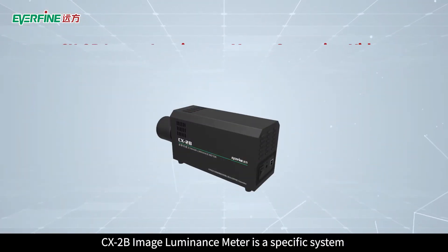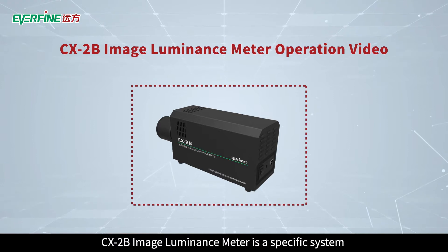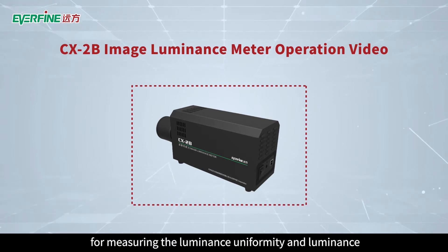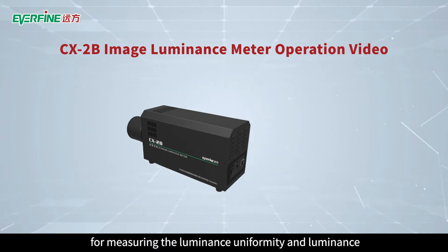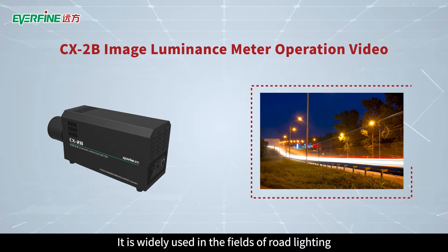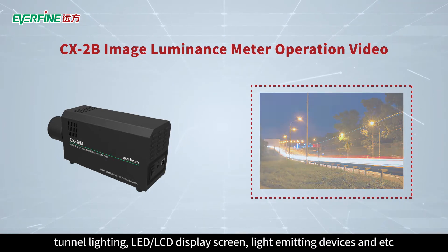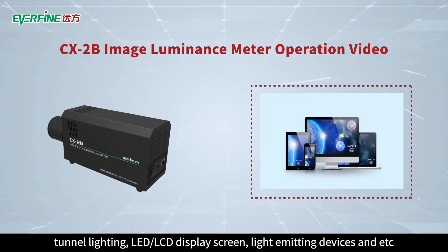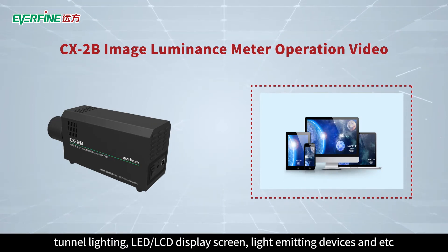The CX2B Image Luminance Meter is a specific system for measuring luminance uniformity and luminance. It is widely used in the fields of road lighting, tunnel lighting, LED, LCD display screens, light emitting devices, and more.